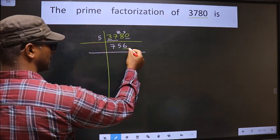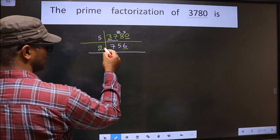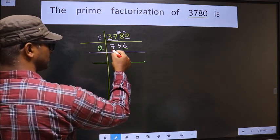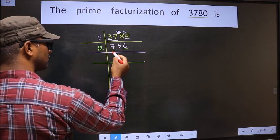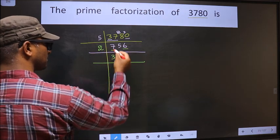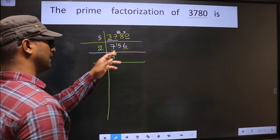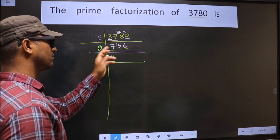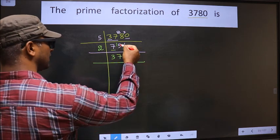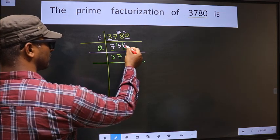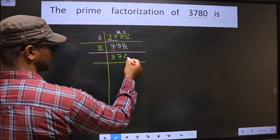Now, for this number, the last digit is 6, which is even. So we take 2 here. The first number is 7. A number close to 7 in the 2 table is 2×3=6. 7 minus 6 is 1; 1 carried forward making it 15. A number close to 15 in the 2 table is 2×7=14. 15 minus 14 is 1; 1 carried forward making it 16. When do we get 16 in the 2 table? 2×8=16.